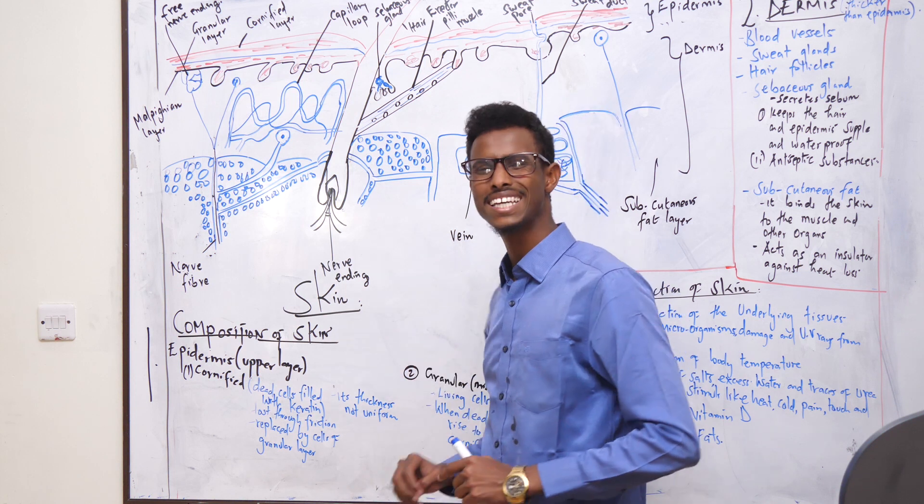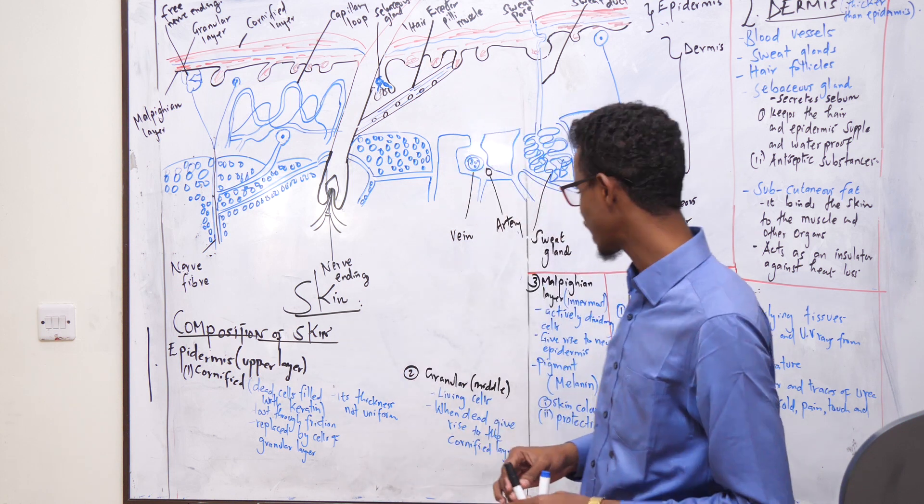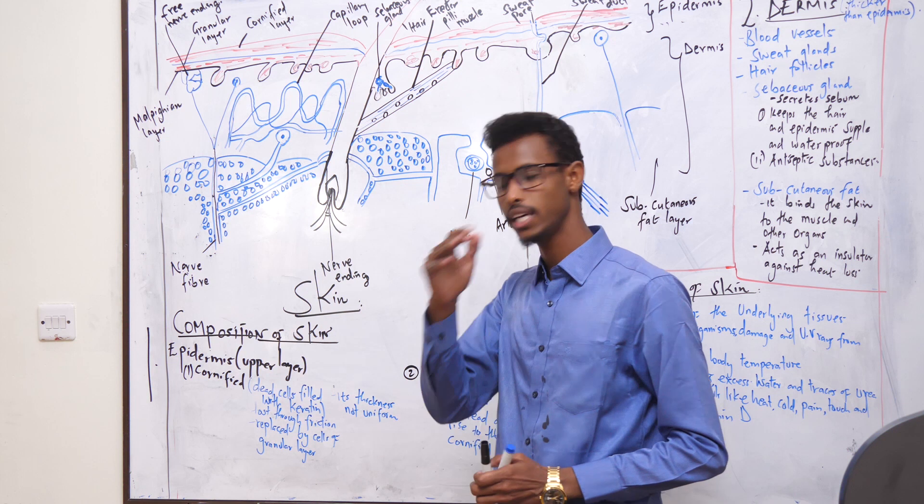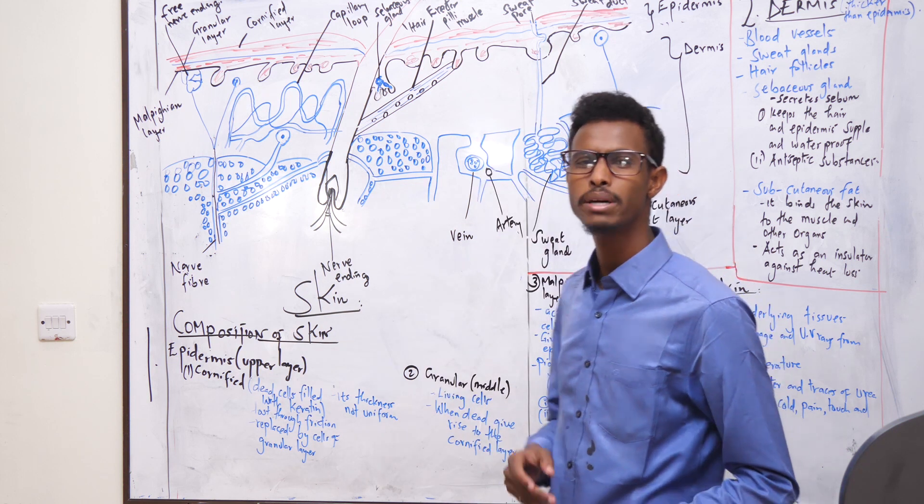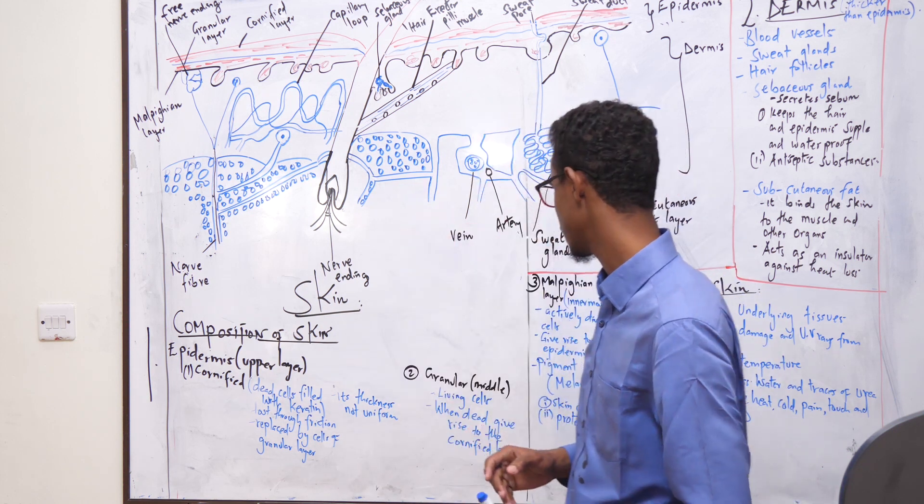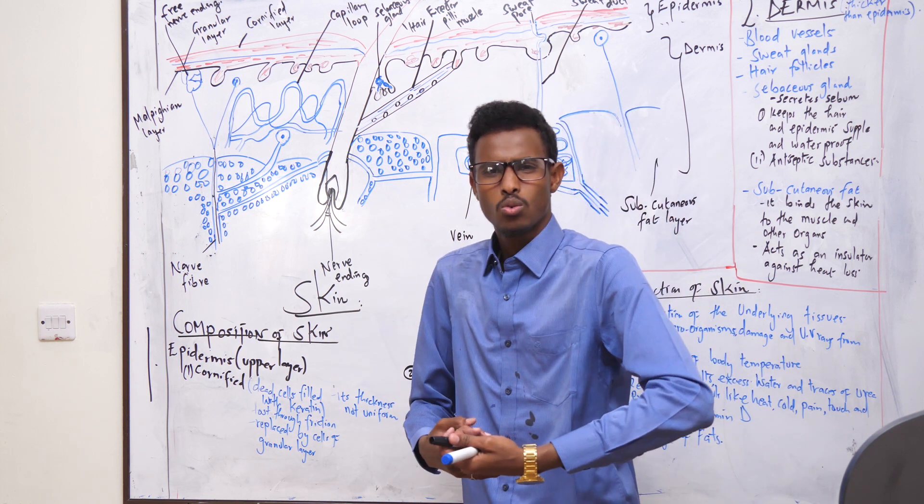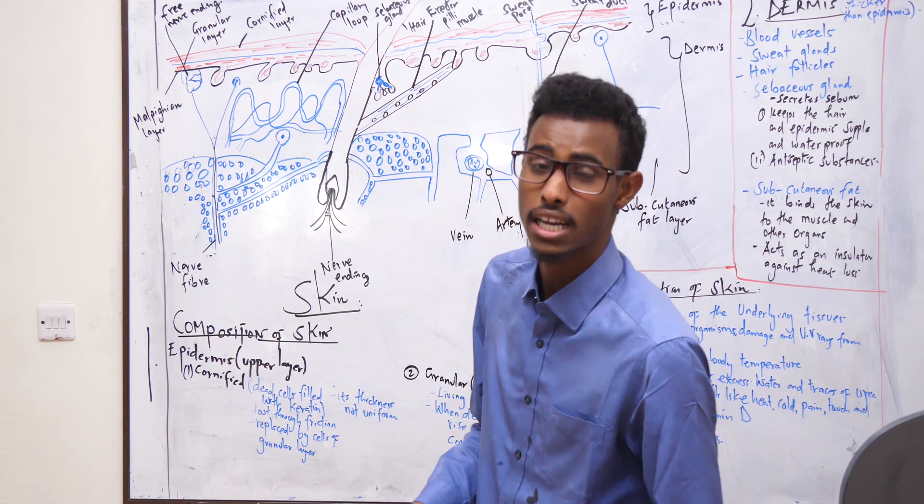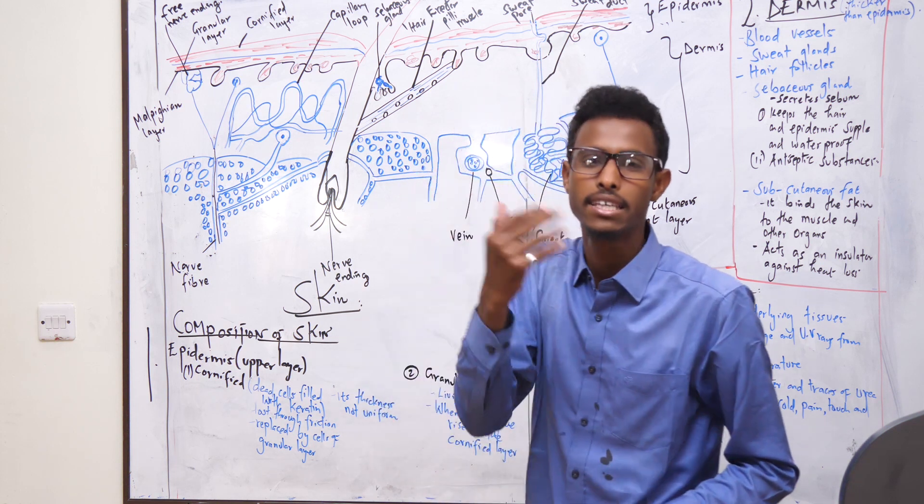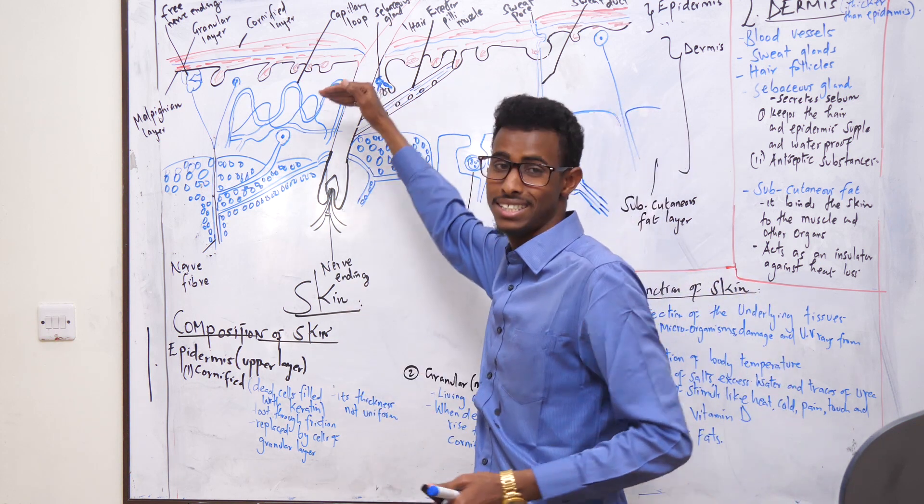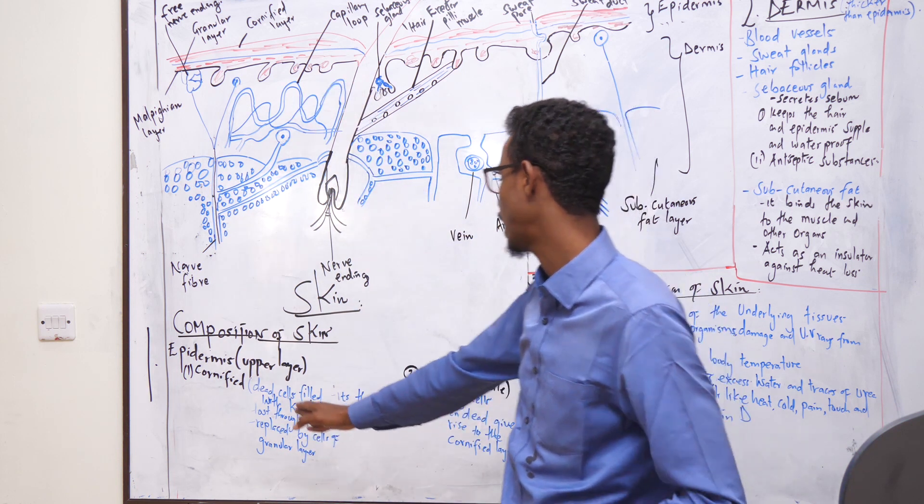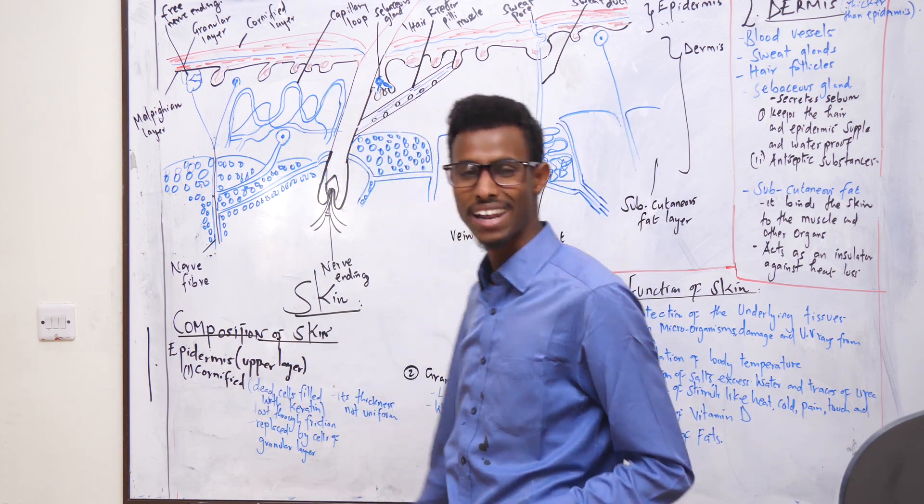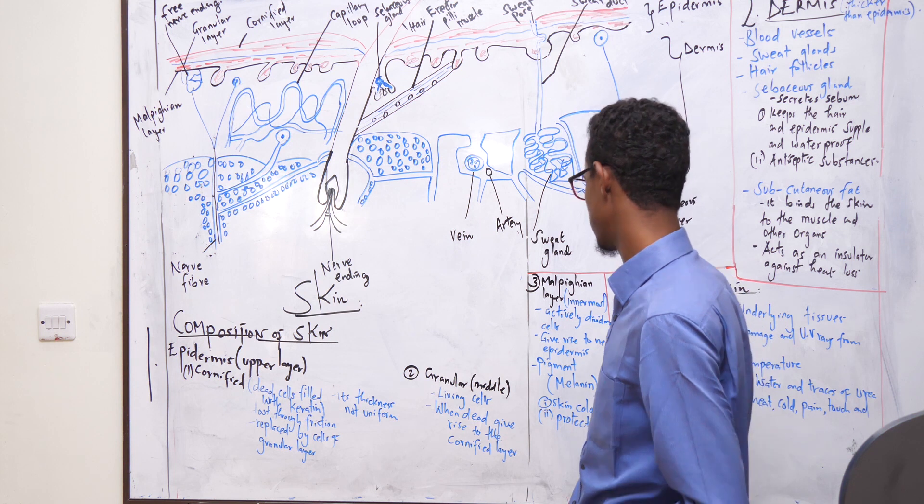Now we're done with the cornified layer. Let's come to the granular layer. The granular layer is the middle layer of the epidermis. It is made up of living cells. What happens when granular layer dies? Dead granular cells give rise to the cornified layer, which is made up of flattened dead cells.